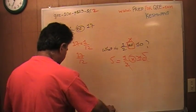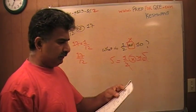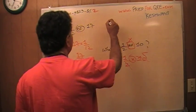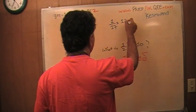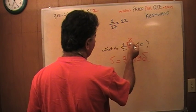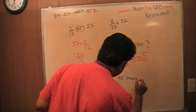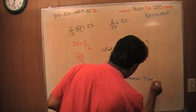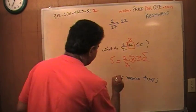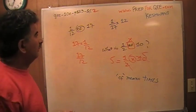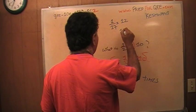One 17th of 12. One 17th of 12. You see? Of right here. Of means times. One 17th of 12, of course, is same as 12 over 17.